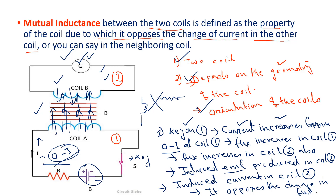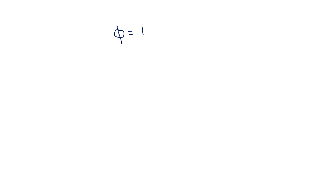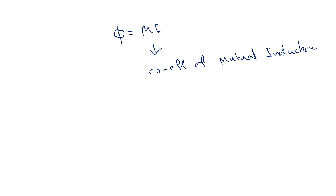Now, how do we write mutual induction mathematically? We use the coefficient of mutual induction M. We can write phi₂ proportional to I₁, where phi₂ is the flux in coil two and I₁ is the current in coil one. So phi₂ = M × I₁, where M is the coefficient of mutual induction.